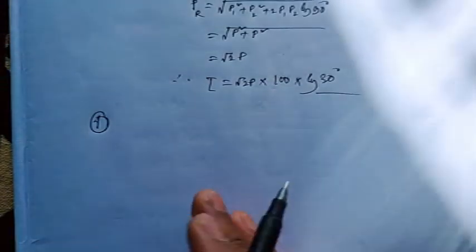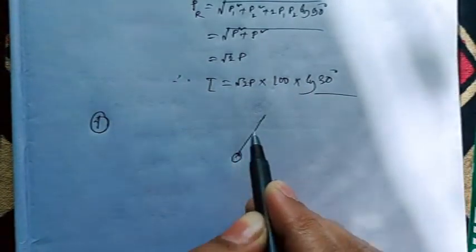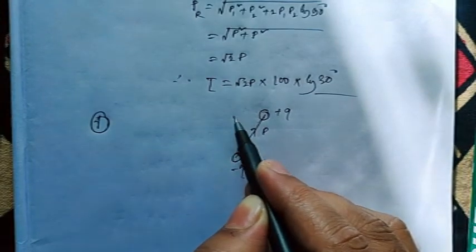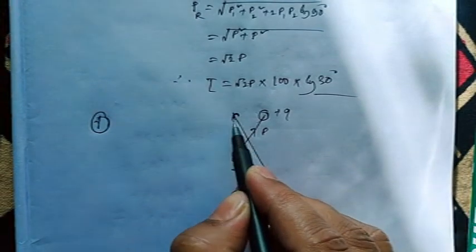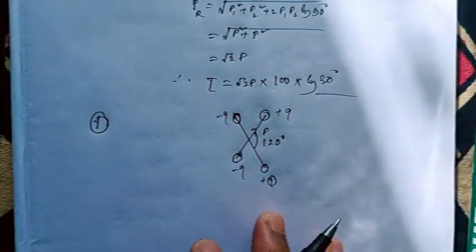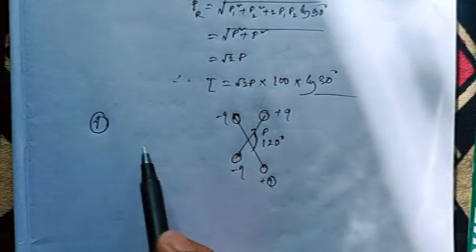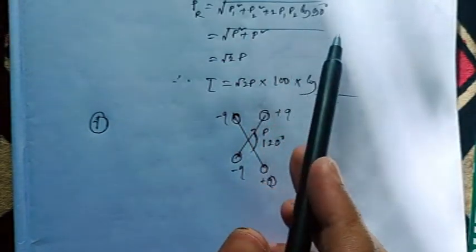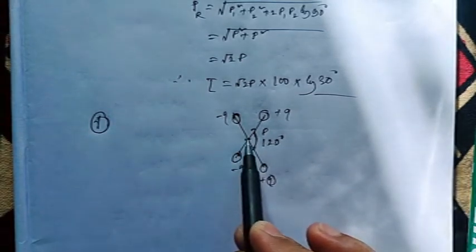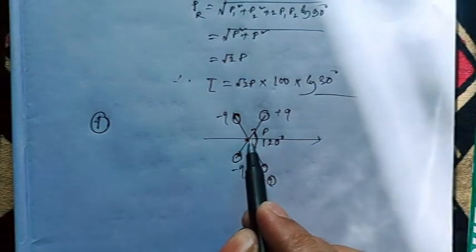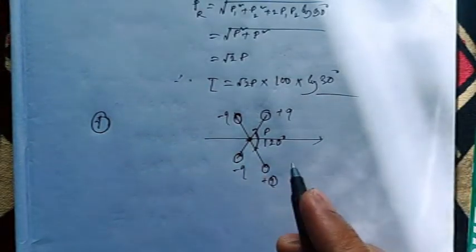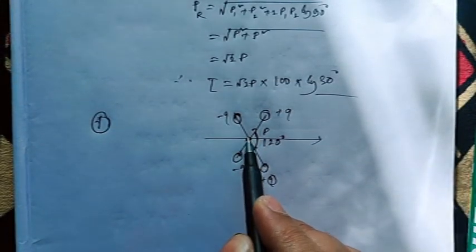The fourth type of problem involves two dipoles: one dipole moment P along one direction and another along a different direction, with an angle of 120 degrees between them. The net dipole moment is found using: P net equals square root of P1 squared plus P2 squared plus 2·P1·P2·cos 120 degrees. Since both are equal magnitude P, this gives the resultant. If an electric field is also given, you can then find the torque on the system. These are the main problem types you may encounter.